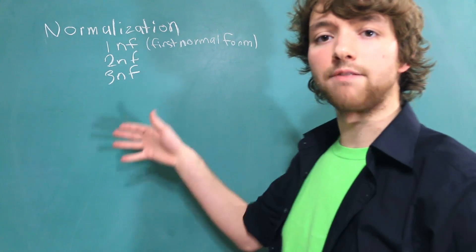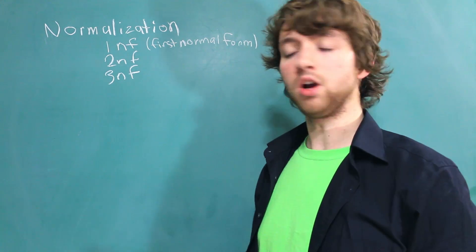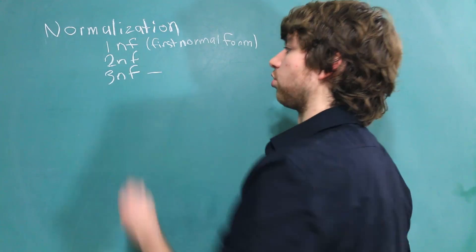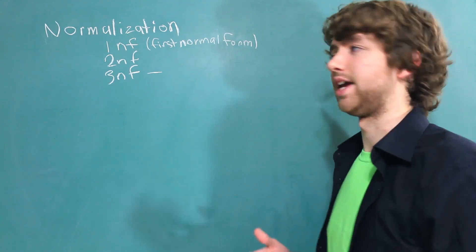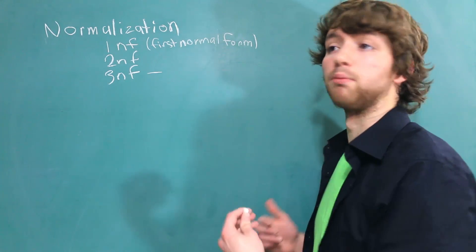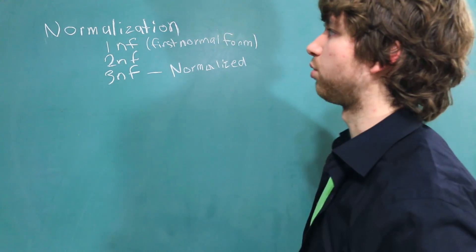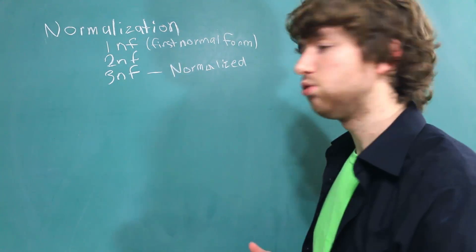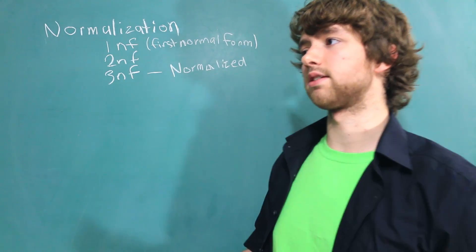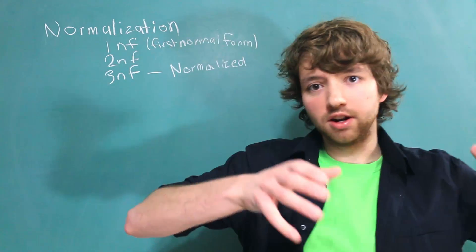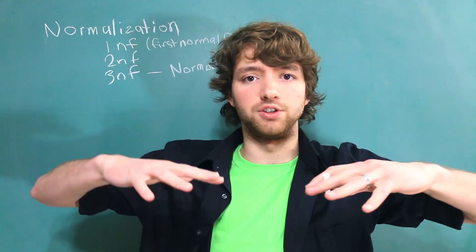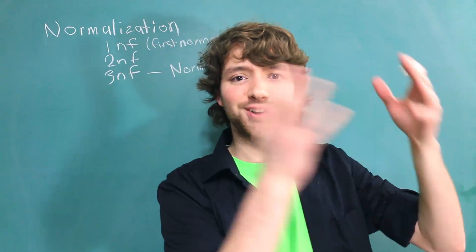There are a couple others after these if you want to research more, but I think once you get to third normal form, you can say that your database is pretty well normalized. Normalized is kind of like the finish line. So if you've learned about normalization and it doesn't really click with you, essentially, think of it as pouring dirty water into filters. The dirty water is your database.